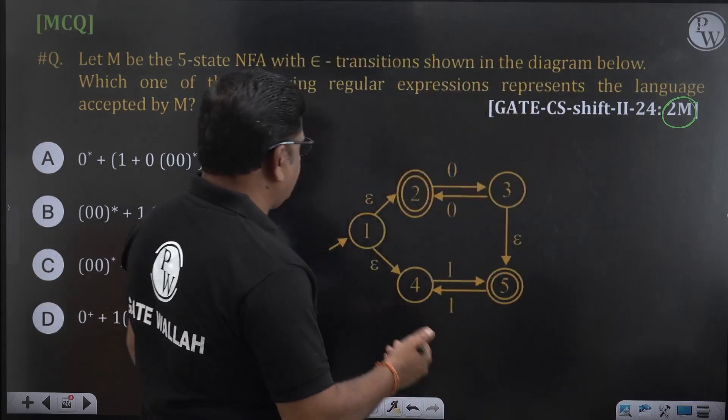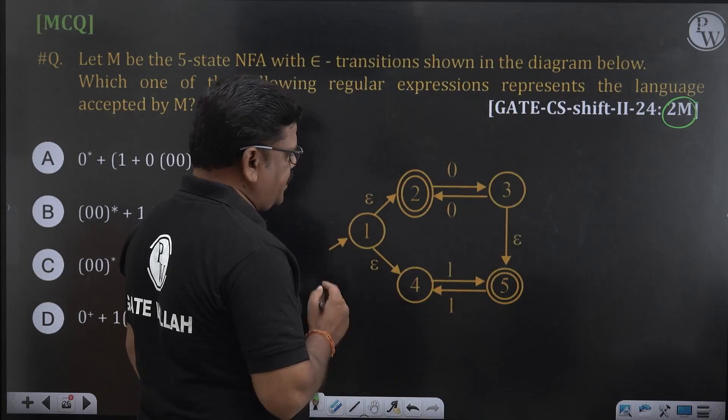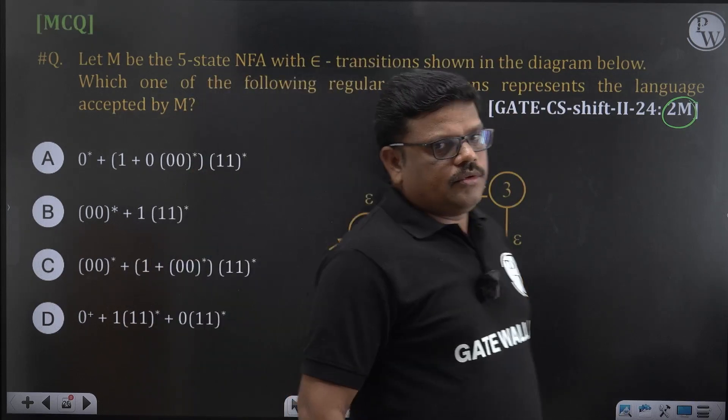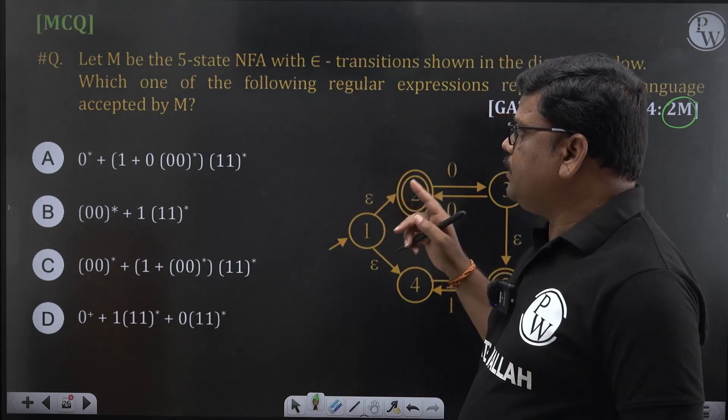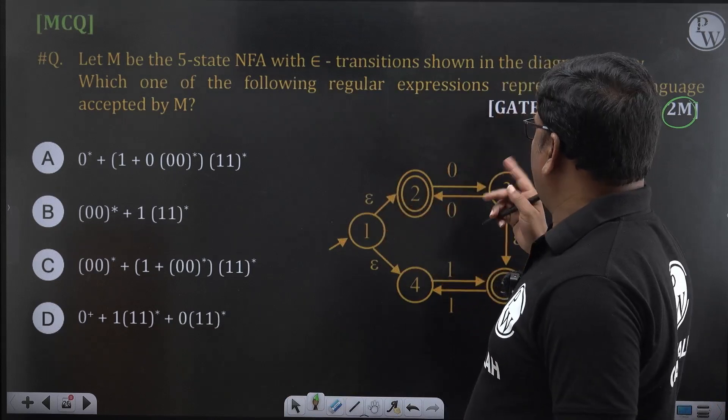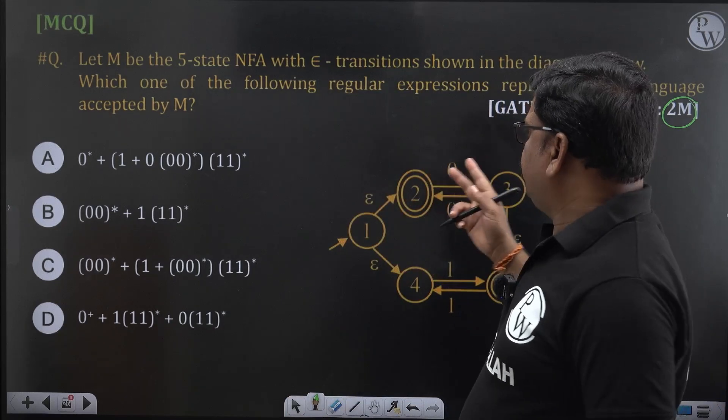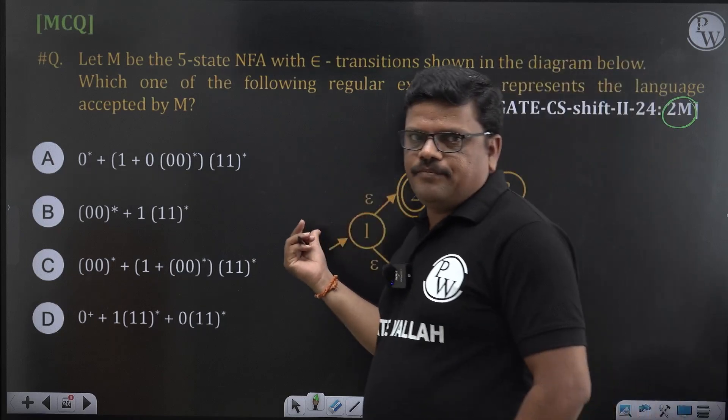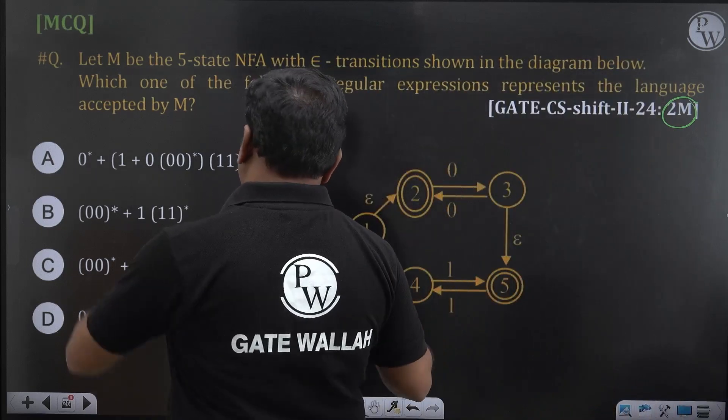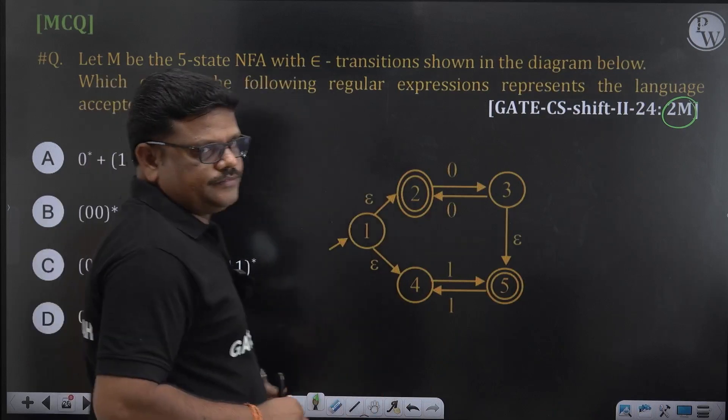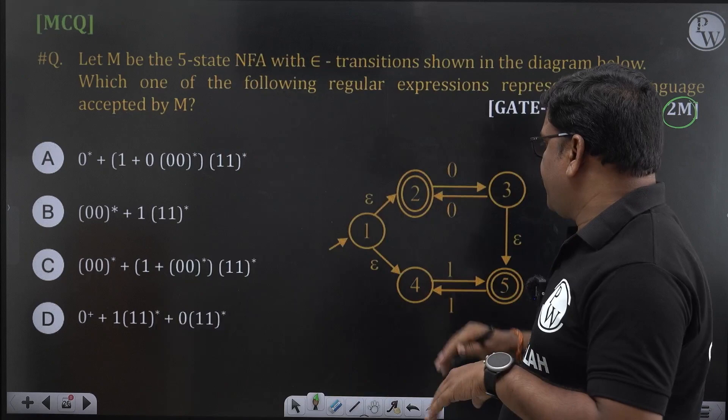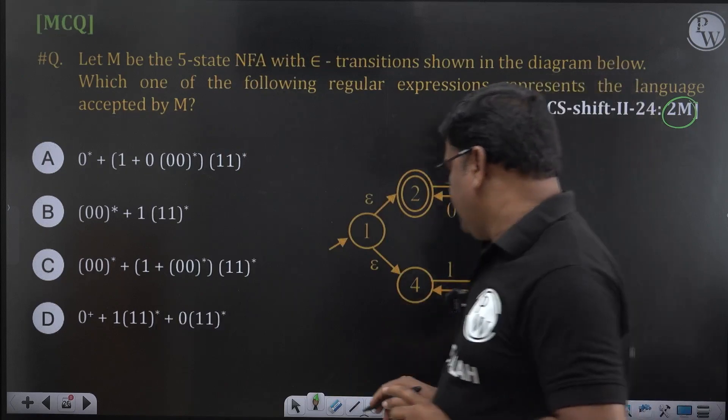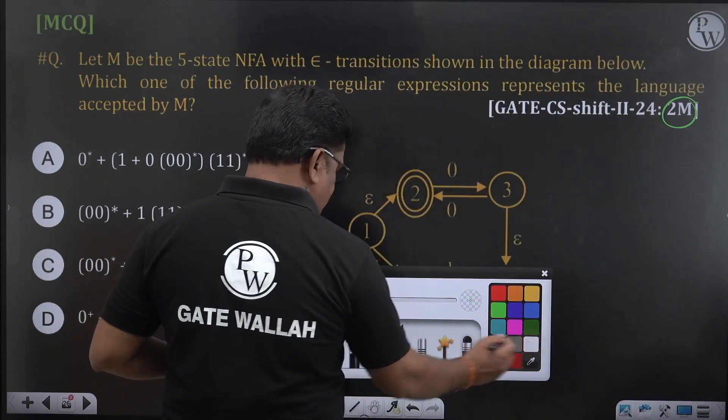He has given an epsilon NFA here, this is one of the epsilon NFA. Now, which of the following regular expression is equivalent to this? Read the question: M be the 5-state epsilon NFA and which of the following regular expression represent the language accepted by M. So, the language of this in this regular expression which is equivalent one. Let us now try to analyze this epsilon NFA, NFA with epsilon transitions.